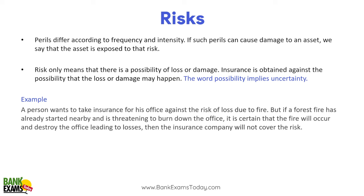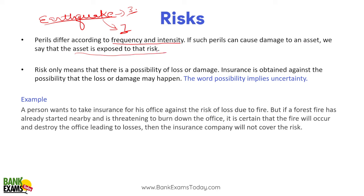Risk. Perils differ according to frequency and intensity. If an earthquake has a Richter scale intensity of 3, there won't be much impact. But if an earthquake comes at 6.5 or 7 on the Richter scale, buildings will collapse and there will be a lot of damage. If such a peril can cause damage to an asset, we say that asset is exposed to that risk. Risk only means there is a possibility of loss or damage due to the peril — a probability of damage to the asset.